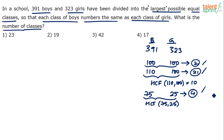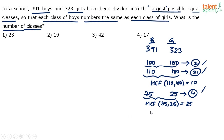So the requirement is to find the number of classes: 2 classes in the 100/100 case, 21 classes in the 110/100 case, and 4 classes in the 75/25 case. The approach is: find the HCF of the given values, then divide the total number of students by the HCF to get the answer.